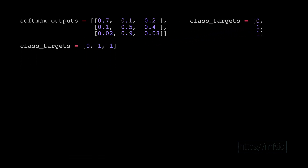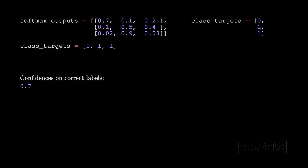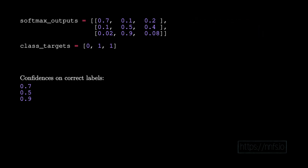The zero means that the target class was zero, so to get the confidence for this class we grab the value at index zero of the first softmax output, which is 0.7. For the second value in the class target vector we have a class of one, so we're interested in the confidence at index one of the second softmax output vector — 0.5 in this case. And then for the third sample in that batch the target was a one, so we match that to the softmax output confidence of 0.9.